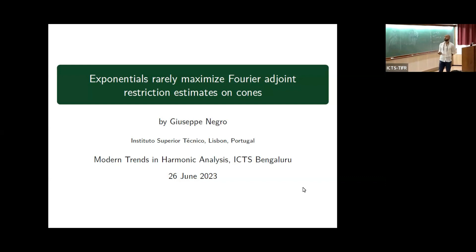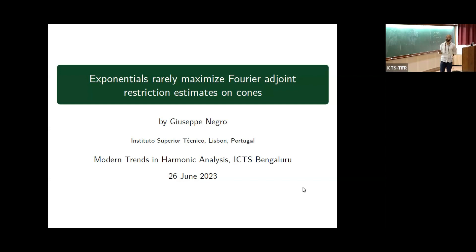This talk kind of starts where Diogo left off. We will be talking about Fourier joint restriction estimates, which is something we have seen, and also this rarely maximized phenomenon, which Diogo briefly mentioned. Let's go further down that line.